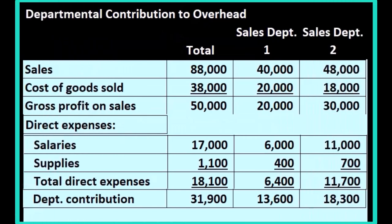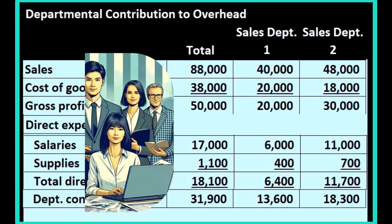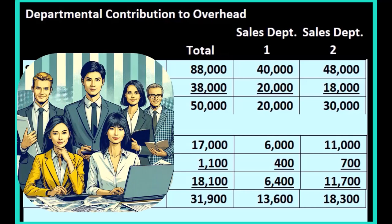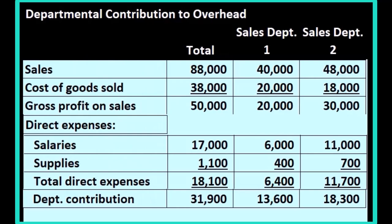That gives us the department contribution margin, or department contribution. This is an important number because these are the expenses which, if we were to eliminate a department, would probably go away — since they are expenses applied directly to the department. If these employees earn their salaries only for that department and supplies were used only for that department, eliminating the department would remove those amounts along with the revenue and cost of goods sold.